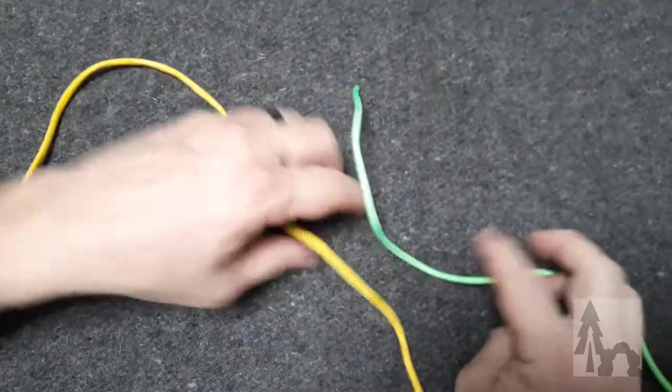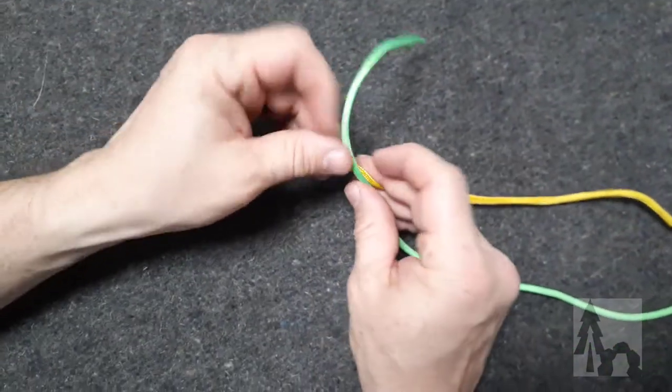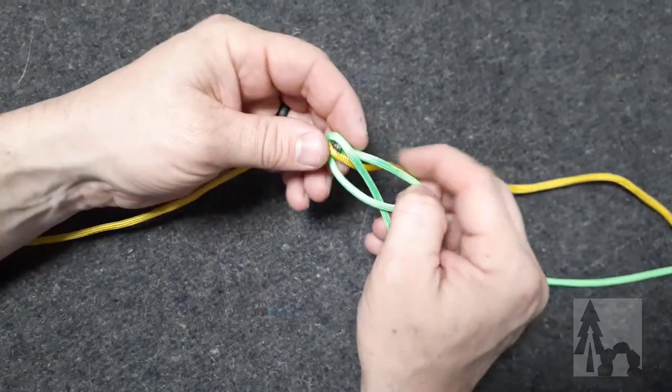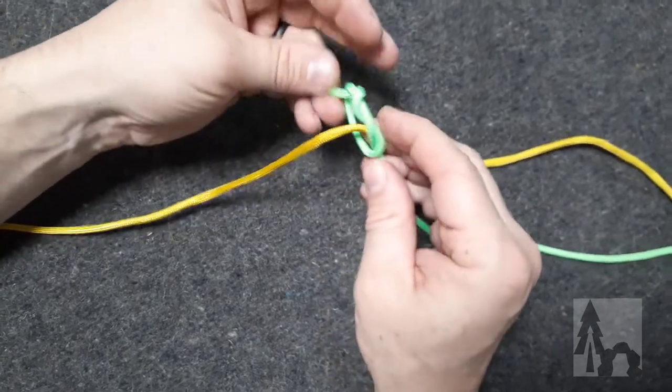To make a little bit more secure of a fisherman's bend, I start out the same way. This time when I tie my green line around the yellow cord, I would tie a double overhand knot. So I go through twice.